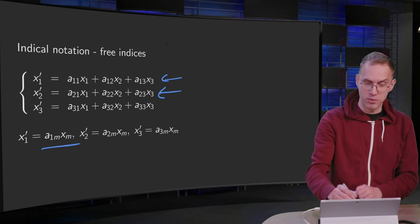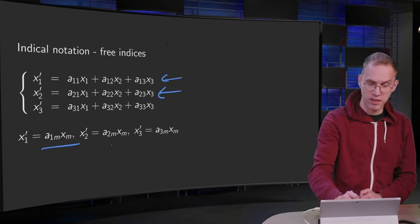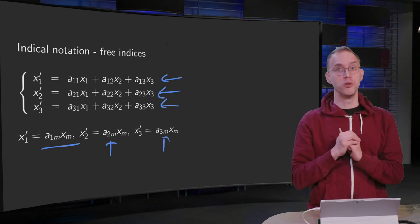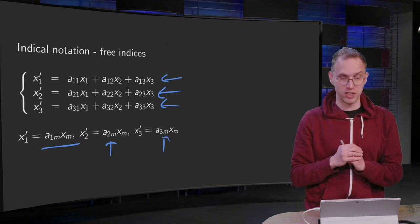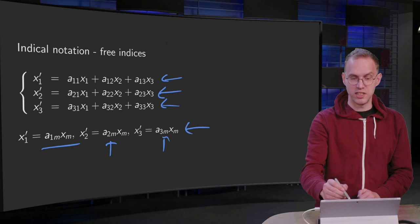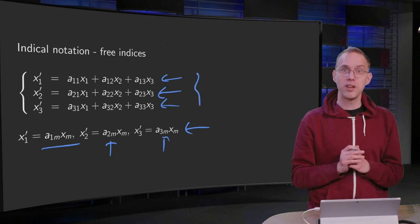You again use the sum over the second index of the a, and you can do the same for the third one. So then you have already reduced your system of differential equations a bit, because now you only have this one line instead of the three lines. That already reduced the notation somewhat.